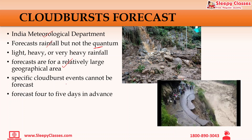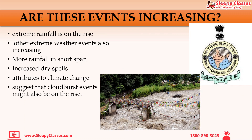Are these events increasing? We all know that now the monsoon patterns are changing, which is why we can see the flooding issue in Pakistan. Extreme rainfall is on the rise. As a result, dry spells will increase, the monsoon span will be small but the downpours will be heavier. Extreme weather conditions are increasing and the rainfall time is a short span. This is what climate change means — we are experiencing it. We can say that cloudburst events in the near future might also be on the rise, as we can see the change in monsoon patterns with respect to Indian weather.